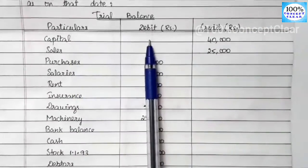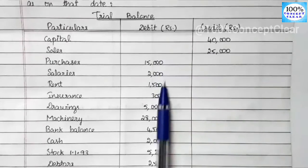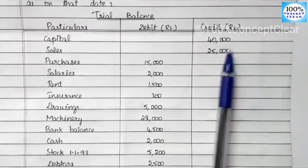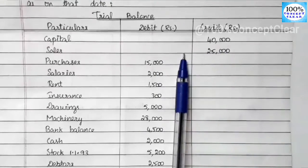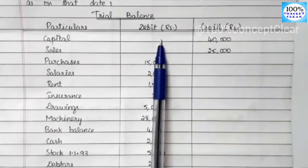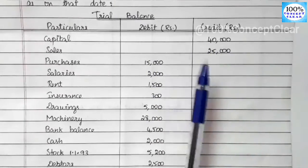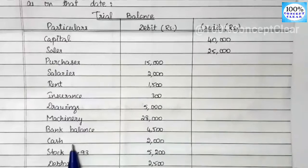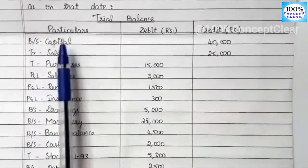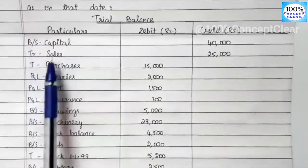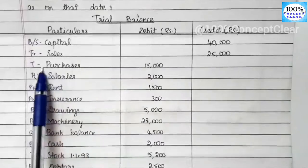Let's see the trial balance. Particulars have debit and credit columns. Debit items go to the debit side and credit items go to the credit side. In the trading and profit and loss account, we have assets on the debit side and liabilities on the credit side. The first item is Capital — Balance Sheet. Next is Sales — Trading. Purchases — Trading.